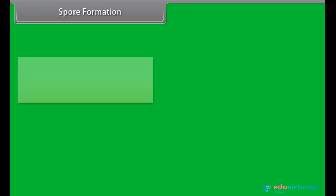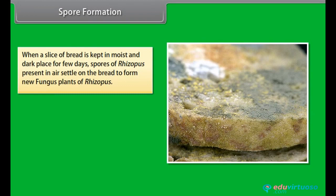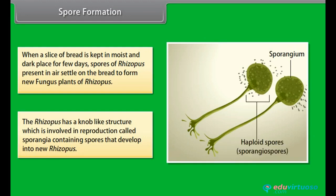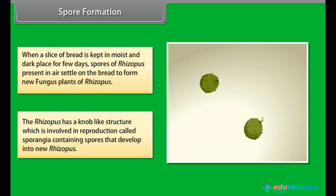When a slice of bread is kept in a moist and dark place for a few days, spores of rhizopus present in the air settle on the bread to form new fungal plants of rhizopus. The rhizopus has a knob-like structure called sporangia, which is involved in reproduction, containing spores that develop into new rhizopus plants.